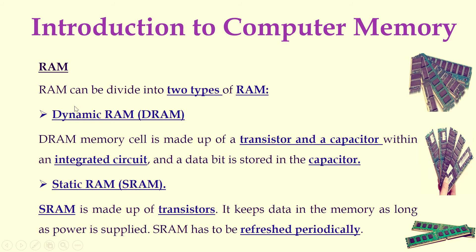RAM can be divided into two types: dynamic RAM and static RAM. Dynamic RAM is also called DRAM. The DRAM memory cell is made up of a transistor and capacitor; each cell is made up of a capacitor with an integrated circuit. The data bits are stored in the capacitor. Static RAM is also called SRAM. It is made up of transistors and keeps data in memory as long as power is supplied. DRAM updates periodically on its own, but SRAM has to be refreshed periodically — that is the main difference between DRAM and SRAM.